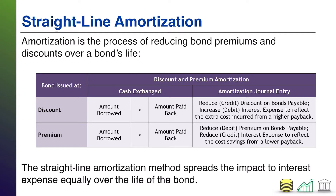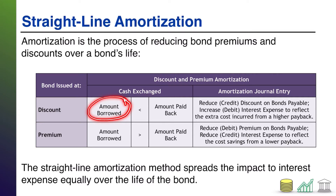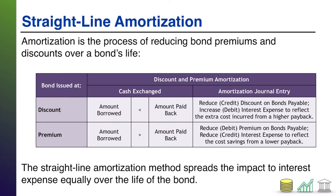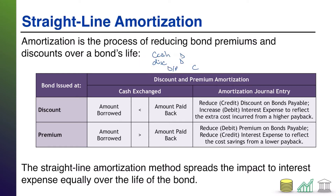Amortization is the process of reducing the premiums or discounts over a bond's life. Here's kind of the overview of how it works. In the case of a discount, the amount that you borrowed — that investors gave you up front on the bond — is actually less than the amount that you're ultimately going to pay back, the face value of the bond. That's how the discount arises. The journal entry for that involves: receive cash, record a discount as a debit, and then record your bonds payable as a credit. So notice we have this account, discount, as a debit.